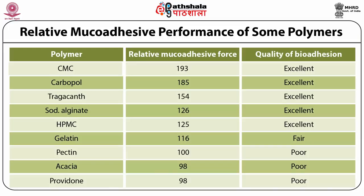A table shows the various levels of mucoadhesive forces exhibited by different categories of polymers, with quality of bioadhesion rated as excellent, fair, or poor. Polymers like CMC, carbopol, and tragacanth show excellent quality of bioadhesion, whereas gelatin shows fair quality. Polymers like povidone, acacia, and pectin show very poor bioadhesion. These qualitative differences are due to the behavior of the polymer in contact with the mucosal surface.